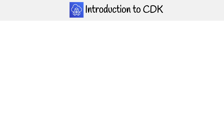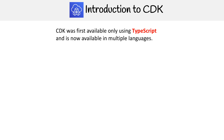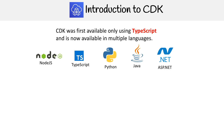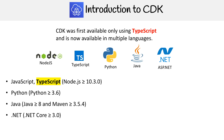CDK was first available only using TypeScript, and then they eventually started releasing for other languages. So we have Node/TypeScript, Python, Java, and ASP.net. I'm still waiting for a Ruby version — hopefully when you're watching this video, a Ruby version becomes available. I think whatever languages are supported by AWS is generally what we'll see, so I would not be surprised if they add PHP and Ruby, but I don't think you'll get one in PowerShell.